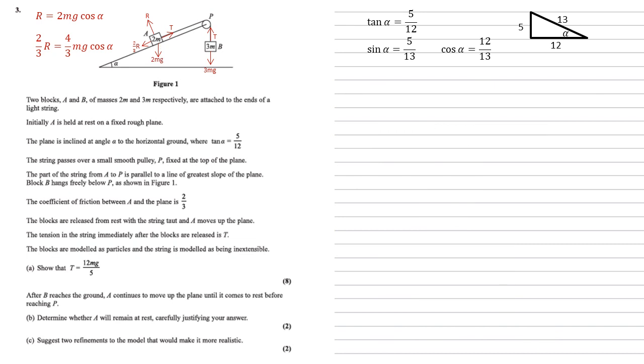After B reaches the ground, A continues to move up the plane until it comes to rest before reaching P. For part B, we need to determine whether A will remain at rest, carefully justifying our answer. So let's look at what's happening to A. Here we have our particle A with mass 2m. We've still got our force due to gravity of 2mg. And our resultant force, which we earlier worked out, is 2mg cos alpha. As we're now looking at whether A will remain at rest or start moving back down the slope again, we're going to put the friction back on, but this time we're going to have the friction going uphill, stopping A from moving down. And as we worked out earlier, that is 4 thirds mg cos alpha.